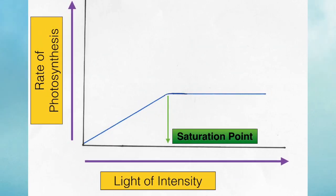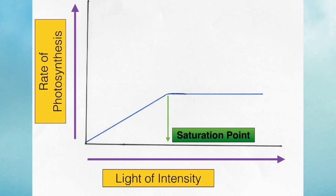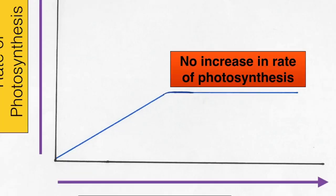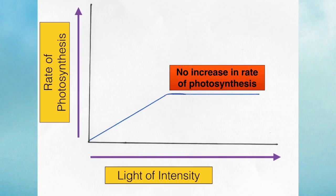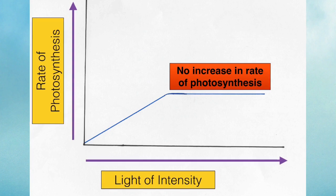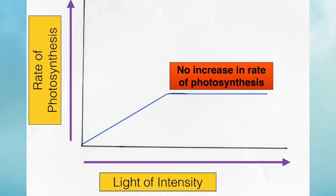This point is known as the saturation point, whereby light intensity is not limiting the rate of photosynthesis. As you pass that saturation point, you can see there's a plateau, a straight line. There is no further increase in the rate of photosynthesis despite increasing light intensity.